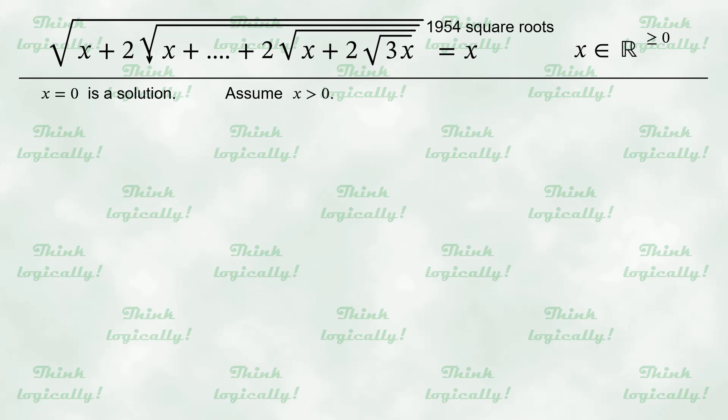Next comes the previously mentioned sequence. Sequence S sub n, where n varies from 0 up to 1954. The sequence is defined recursively. The starting element S sub 0 equals x, while all the other elements are defined by a formula. S sub n equals square root of x plus 2 times S sub n minus 1. According to the property of an arithmetic square root, all elements of the sequence are non-negative.